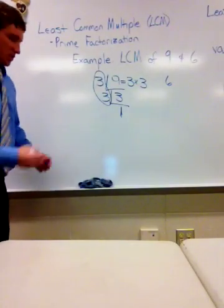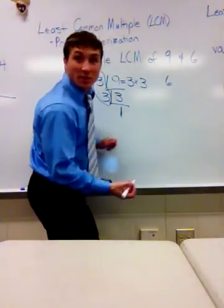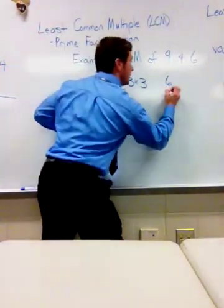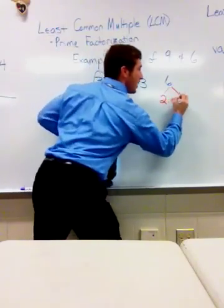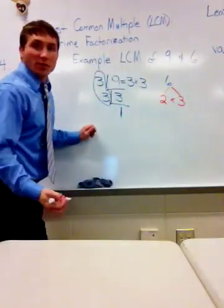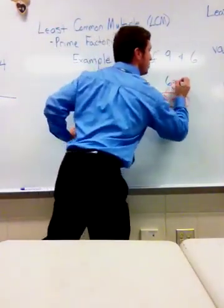Now I need to do the prime factorization for the number six. I'm going to use the factor tree method on this one. Six is the same as two times three. Both of these numbers are prime numbers, so my prime factorization would be six equals two times three.